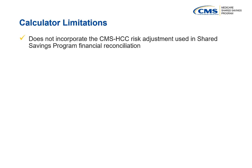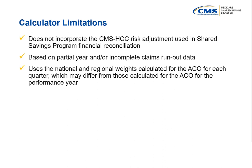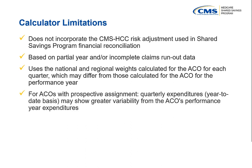Please note that there are some limitations to this calculator. First, it does not incorporate the CMS HCC risk adjustment used in Shared Savings Program financial reconciliation. Second, it's based on partial year and/or incomplete claims run-out data. Third, it uses the national and regional weights calculated for the ACO for each quarter, which may differ from those calculated for the ACO for the performance year. And fourth, for ACOs with prospective assignment, the ACO's quarterly expenditures are measured on a year-to-date basis, which may show greater variability from the ultimate performance year expenditures. It's important to note that an ACO's financial reconciliation results may differ from those estimated by this calculator.